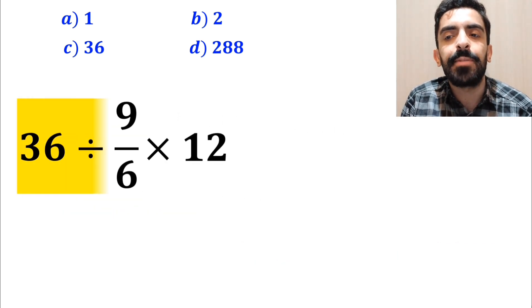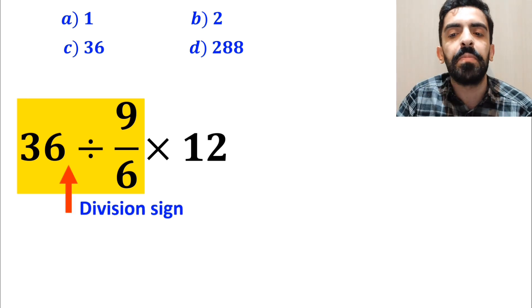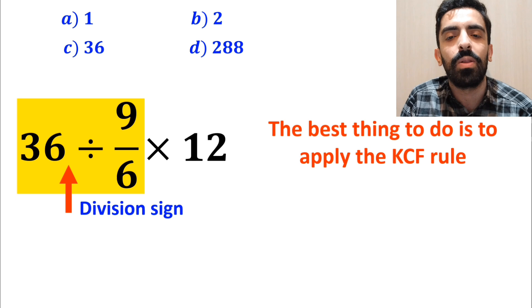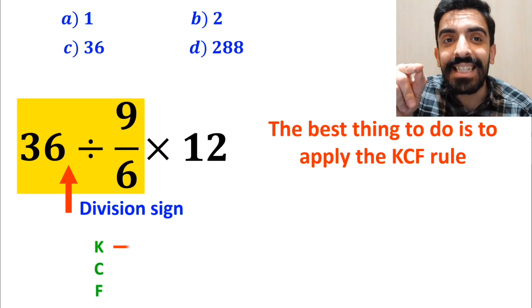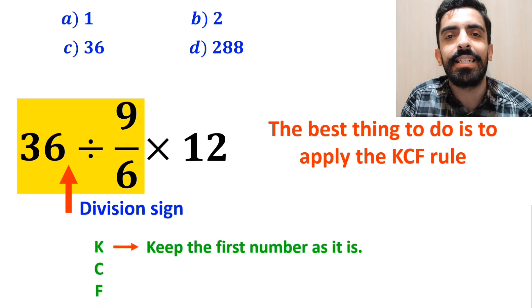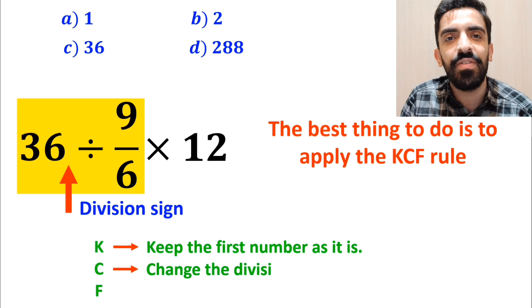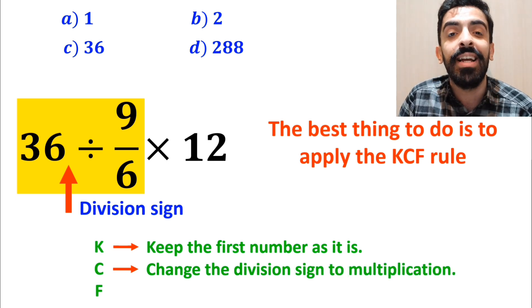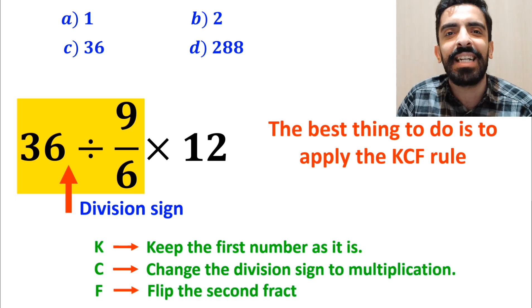So, we'll start with the expression 36 divided by 9 over 6. Whenever we see a division sign between two terms, the best thing to do is to apply the K-C-F rule. In this rule, K stands for keep the first number as it is, C stands for change the division sign to multiplication, and F stands for flip the second fraction.